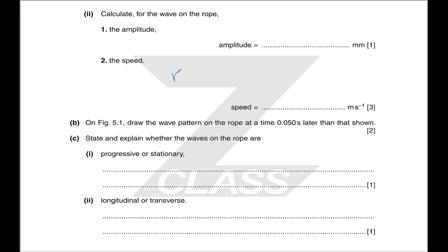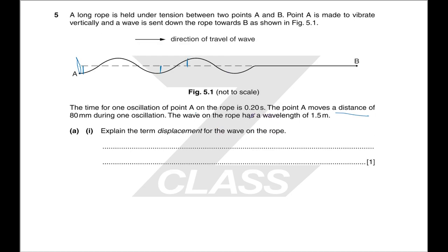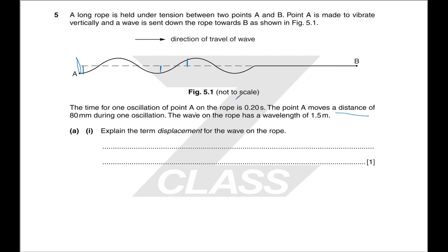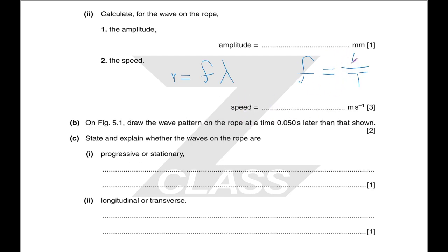For the speed, use v equals f lambda — your standard wave properties equation. You also need frequency equals 1 over the period. The time for one oscillation is the period: 0.2 seconds. Frequency is therefore 5 per second. Then multiply by the wavelength to get the wave speed.